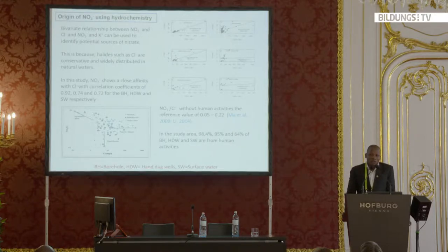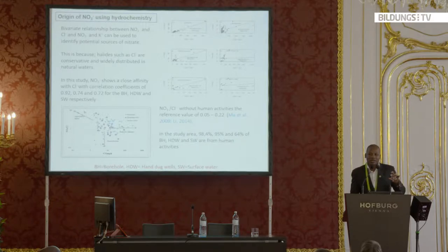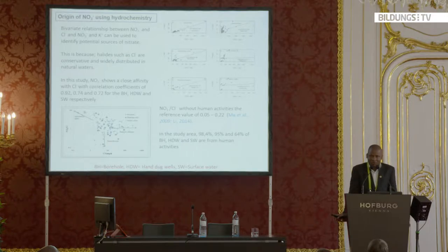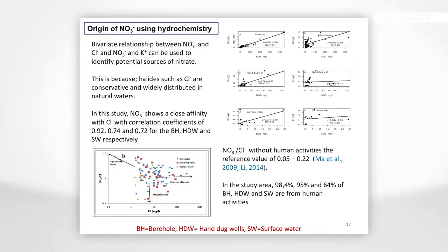I also considered potassium — since most fertilizers used in our country are NPK compound fertilizer, if nitrate is coming from fertilizer, nitrate and potassium should correlate strongly. I did that plot and found a very weak relationship between nitrates and potassium, meaning we can safely rule out chemical fertilizer as a source of nitrate in the area.